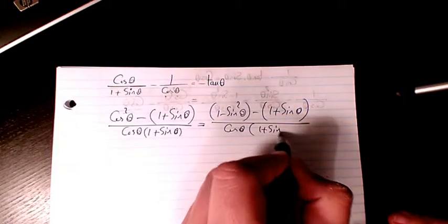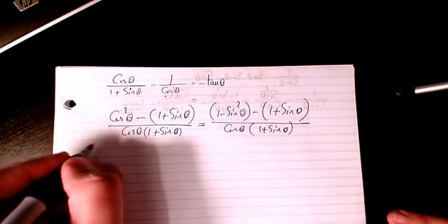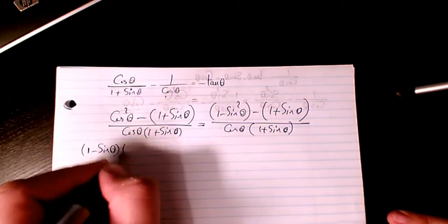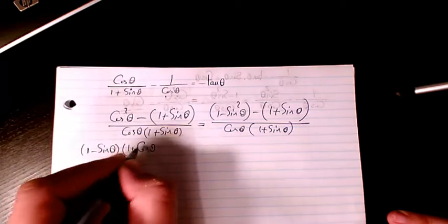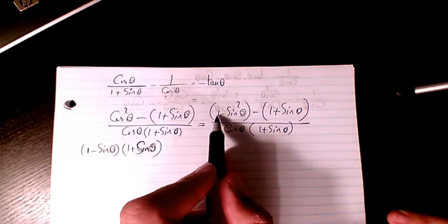1 minus sine squared is from the difference of squares. I can decompose it to 1 minus sine theta times 1 plus sine theta.